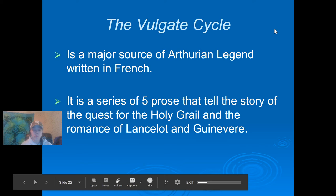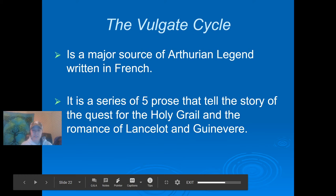The Vulgate Cycle is a major source of Arthurian Legend that was written in French. It is a series of five prose volumes that tell the story of the quest for the Holy Grail. You should also know about the romance of Lancelot and Queen Guinevere, which I will be covering today as well. The major parts of these stories are from the early 13th century.